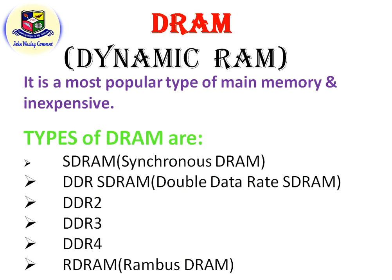The reason these types are in a sequence like DDR2, DDR3 is because of generations. Just as computers have evolved from generation to generation — first, second, third generation — many things change over time. In the same way, these DRAMs are also changing over time.